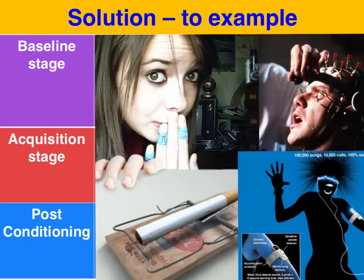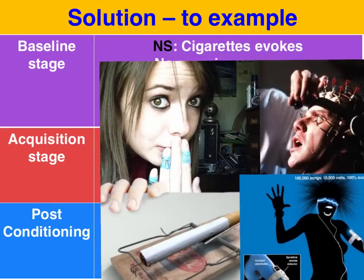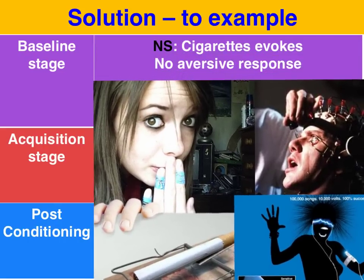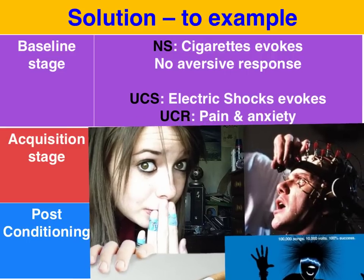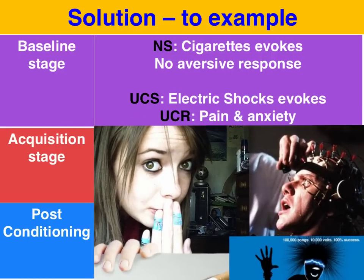Using the language of classical conditioning, let's outline the three stages of conditioning for aversion therapy in this case. In the baseline stage, the sight or smell — or even smoking — evokes no aversive response; it's neutral. An electric shock will reflexively evoke pain and anxiety, so the electric shock is an unconditioned stimulus which reflexively evokes an unconditioned response.